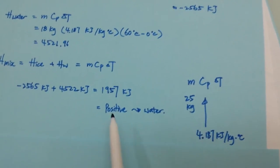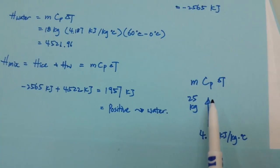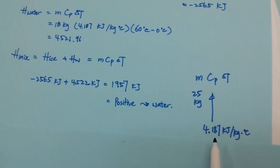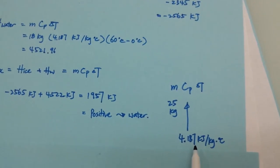Because we know that this is going to be water, the heating capacity that we are going to use will be 4.187.